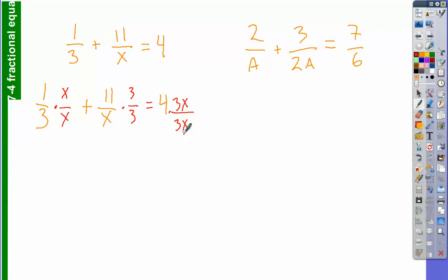So if I were to find a common denominator, this is what I would do, right? And so if I were to go ahead and go further, I'd get x over 3x plus 33 over 3x is equal to 12x over 3x, right? And then I could figure it out, right?